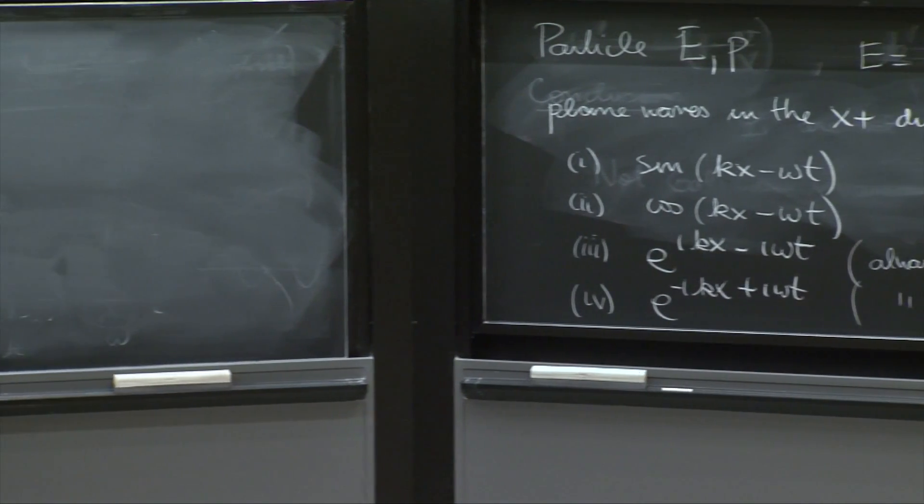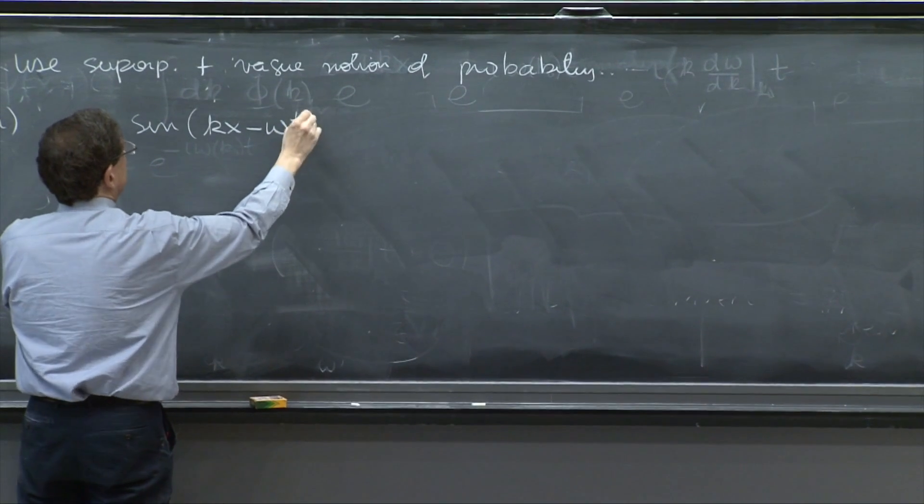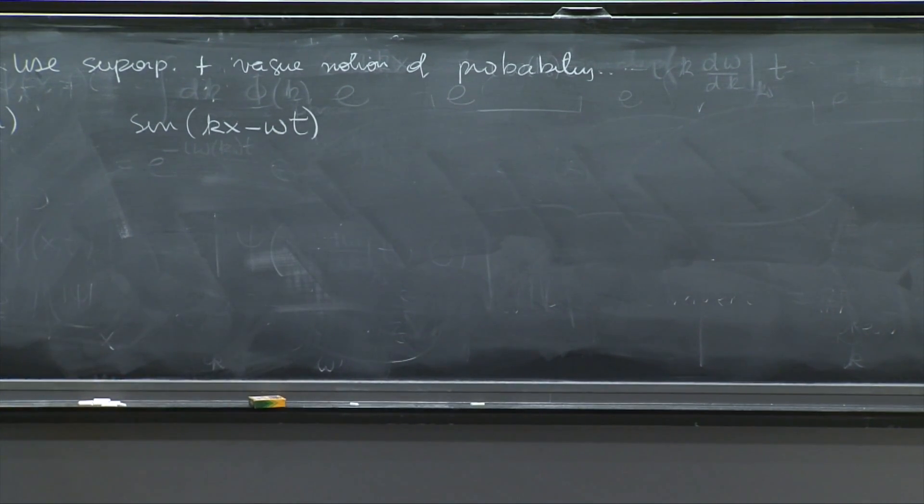So in case one, I would have to put a sine of kx minus omega t. That's your wave that is moving to the right.